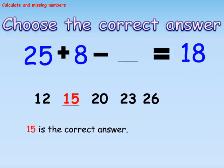Choose the correct answer: 25 plus 8 minus dash equals 18. The options are 12, 15, 20, 23, 26. Here, 15 is the correct answer.